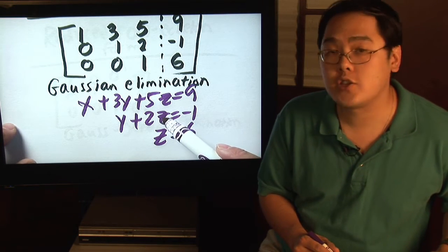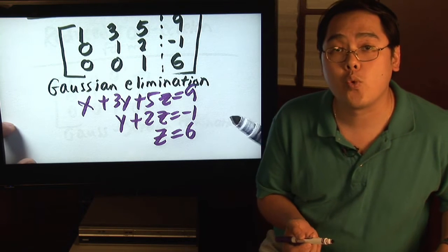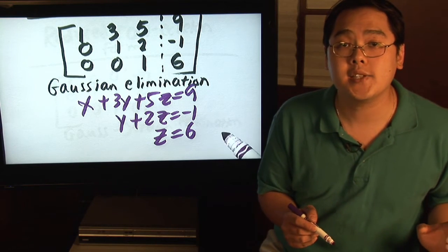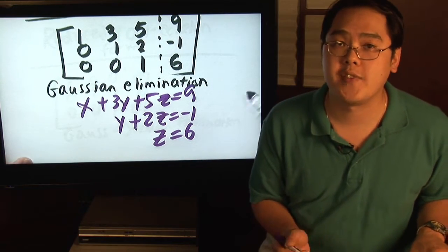Now, the reason row echelon form is beneficial is because you know what the bottom answer is. You can take the 6, plug it back into the second equation, find out what y is, and then once you know your y, you can take both the y and z values and plug it back in to figure out your x value.